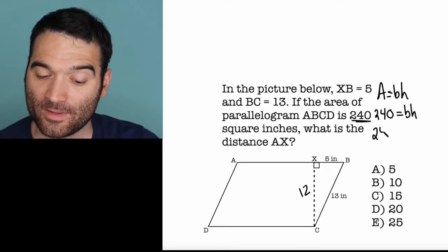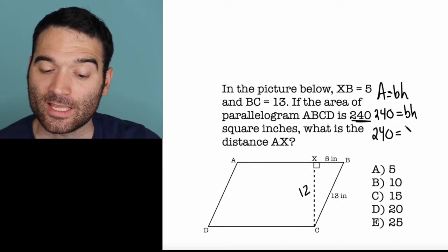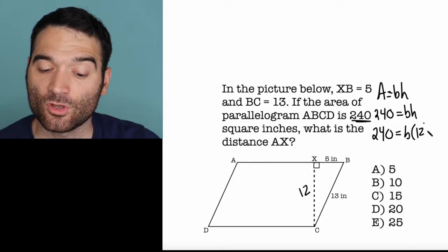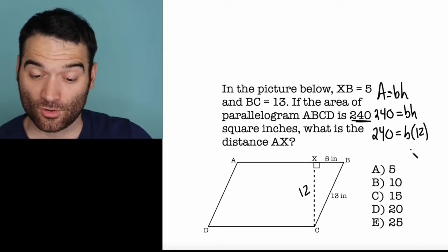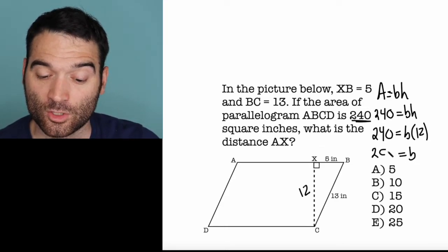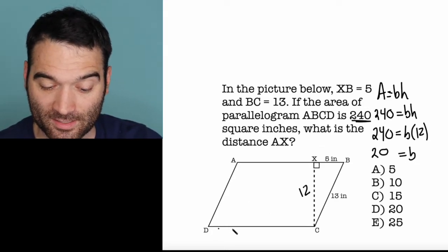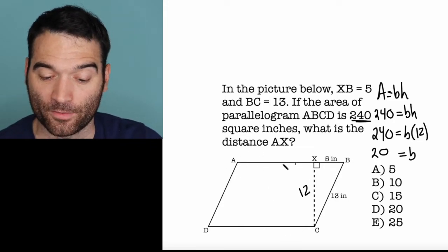Okay. So that means that 240 equals base times 12. And I can now solve for the base. The base of this triangle is equal to 20. So the base, DC or AB, that whole thing is 20.